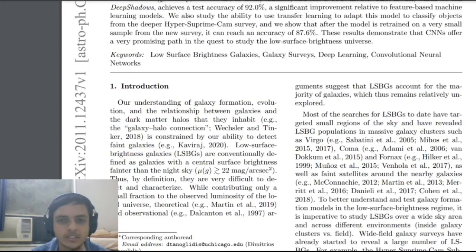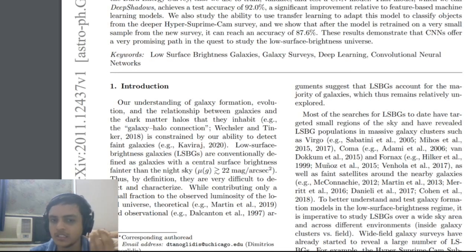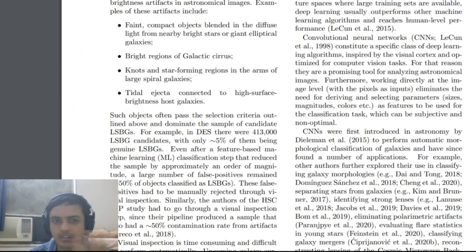The paper's introduction covers our understanding of galaxy formation and how we observe galaxies from Earth, mostly using the photons we receive. LSBG is one category, defined as galaxies that fall into the range of 22 mag per arcsecond squared.